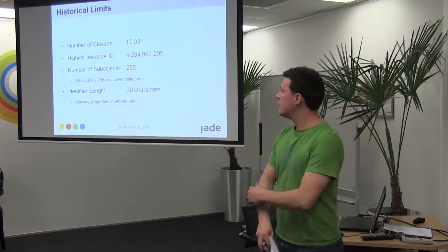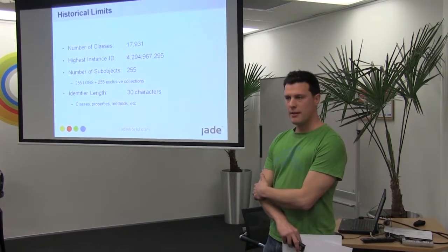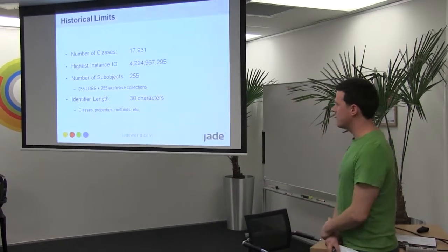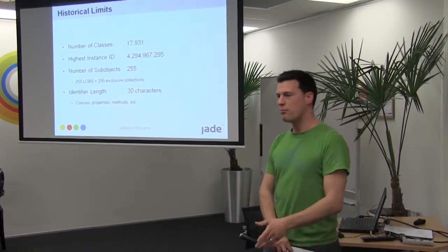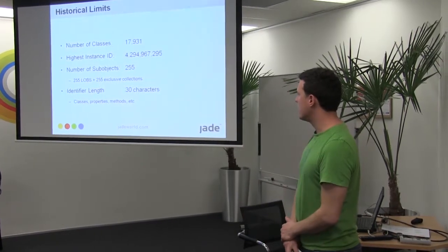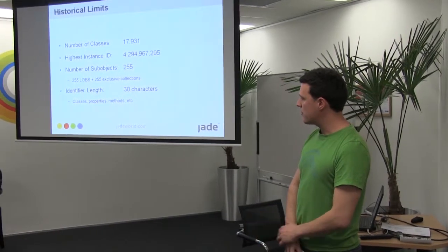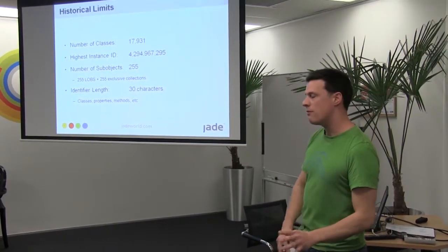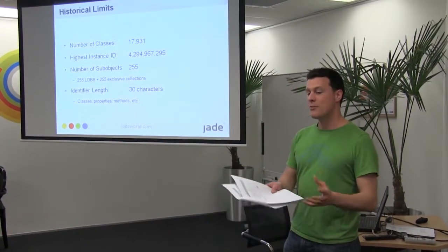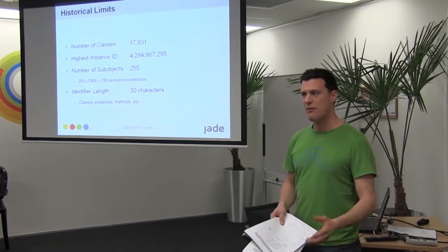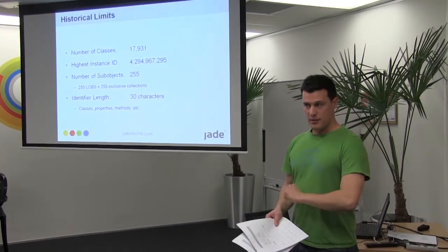Historically we've had some hard limits in Jade. The number of classes has been about 18,000 highest instance ID — and we're all programmers, so you'll know that this number is 2 to the 32 minus 1. The number of sub-objects has been 255 per object, and that includes blobs and slobs. You can have 255 blobs and slobs, and also 255 exclusive collections.